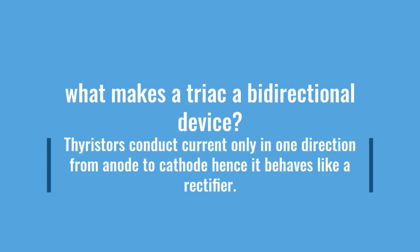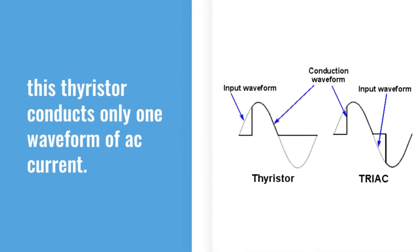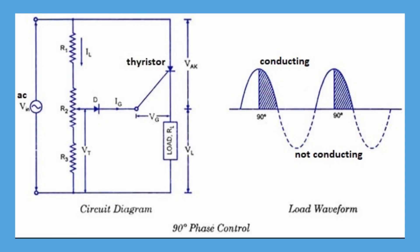Let me introduce you to some important characteristics of a TRIAC that make it possible to conduct current in both directions. Thyristors conduct current only in one direction from anode to cathode, hence they behave like a rectifier, conducting only one waveform of AC current. For DC switching circuits this one-way switching characteristic may be acceptable, but in sinusoidal AC switching circuits, this unidirectional property is a problem as it only conducts during one half of the cycle, just like a half-wave rectifier. Therefore, for AC operation, only half the power is delivered to the load by a thyristor.